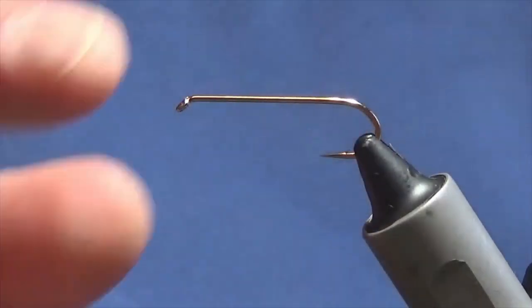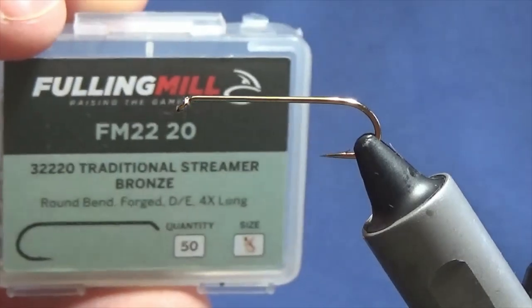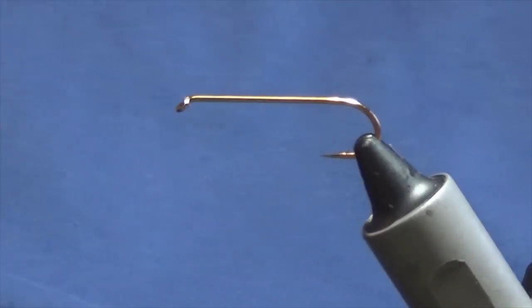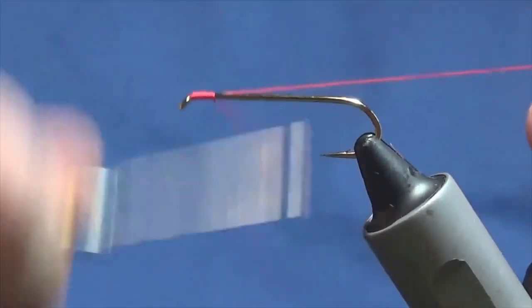The hook in the vise is a bronze streamer, traditional streamer in bronze. It's one of the Fulling Mill hooks. There are other bronze hooks available. I'm just going to come in and get the Glo-Brite floss started at the eye of the hook.